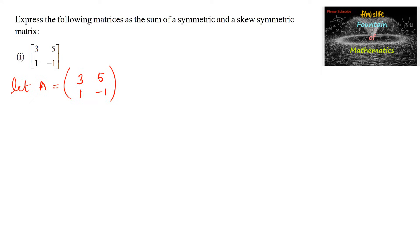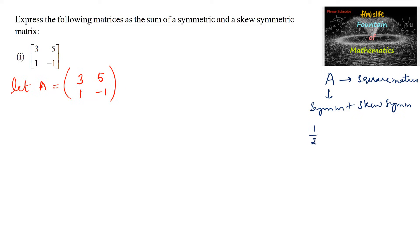We know that every square matrix can be expressed as the sum of a symmetric and skew symmetric matrix by: (1/2)(A + A transpose) + (1/2)(A − A transpose), where (A + A transpose)/2 is symmetric and (1/2)(A − A transpose) is the skew symmetric matrix. Let us call these P and Q respectively.